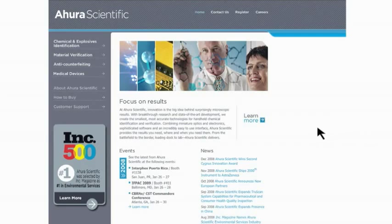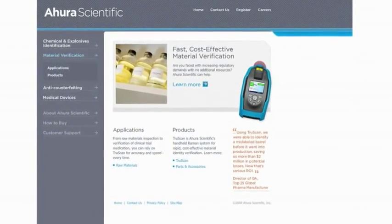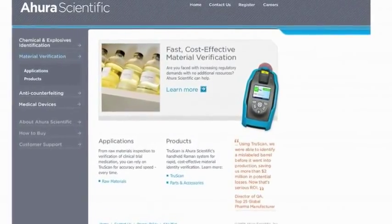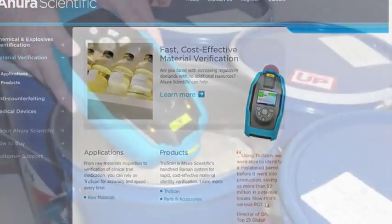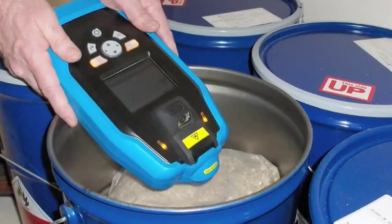Ahura Scientific is the pioneer in providing rugged, ultra-compact, hand-held instruments that address the growing need for accurate point-of-use chemical identification and authentication in a range of applications.